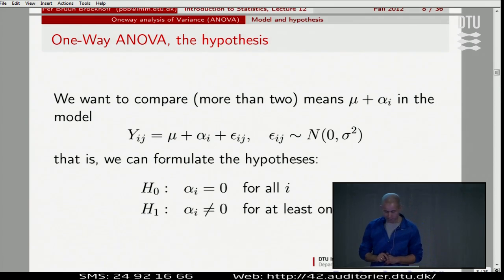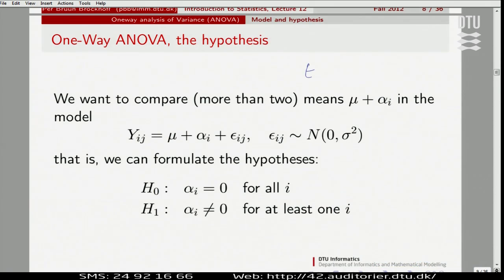The model is written out again here. Maybe you could say that the expected value of an individual observation is given by the overall level plus the contribution for each group. You may sometimes find a notation which is also a valid notation simply using a mu_i there. You might come across this notation. So just having a mu_1, mu_2, mu_3, that's one notation.